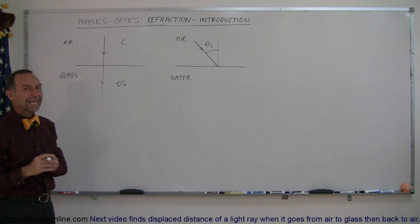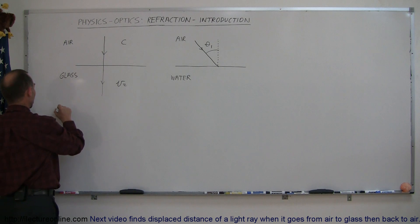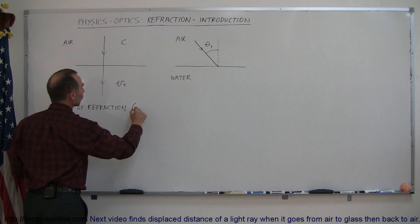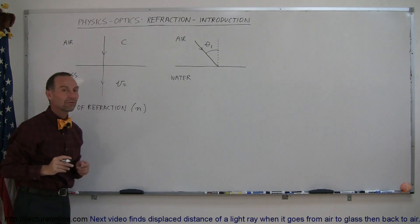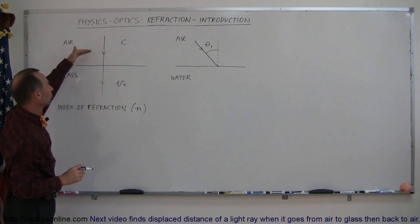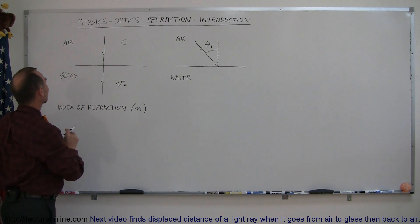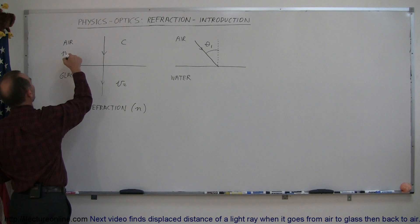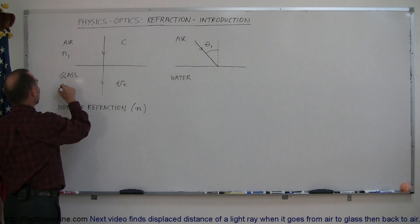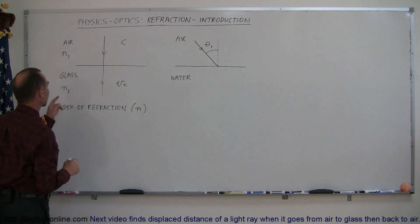Well, that depends on something called the index of refraction. To indicate what that is, we use the letter n. Since I like to denote when the ray travels from one medium to another as going from medium one to medium two, I'll call this n1 the index of refraction of the first medium, meaning air, and n2 is going to be the index of refraction of glass.